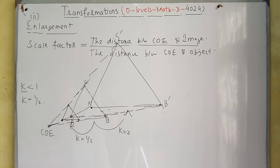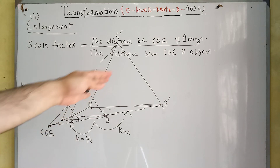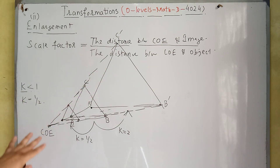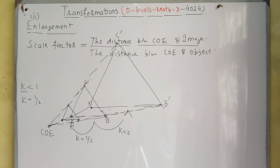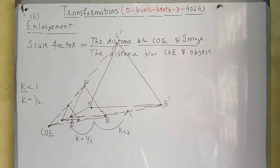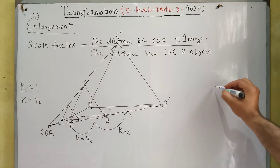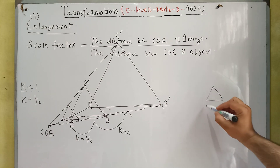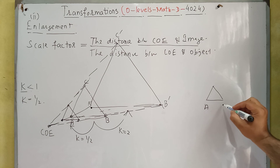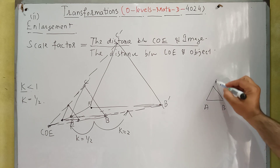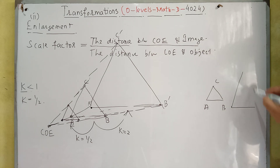As I have already told you, we have three factors: scale factor, object, and image. Sometimes we will have object and image and we will have to find the center of enlargement.